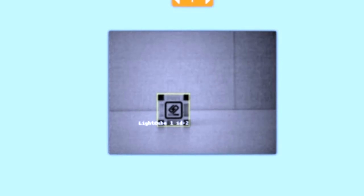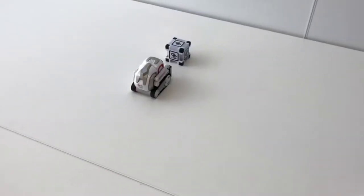If Cosmo sees Cube1, on his camera viewer you'll see a box around the cube's image with an ID next to it. Cosmo will then move towards the cube.